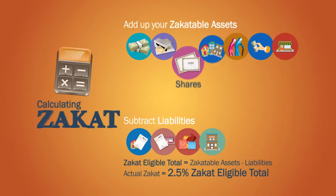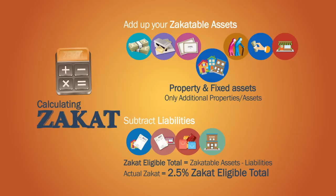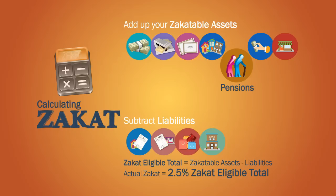Property and fixed assets, not including the house in which you live. Only additional properties and assets which are intended for resale or from which rental income is received. Pensions after the age of retirement.